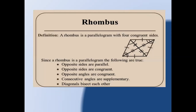Now we have rhombus. What is a rhombus? A rhombus is a parallelogram with four congruent sides, meaning all four sides are equal.